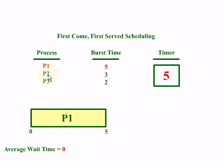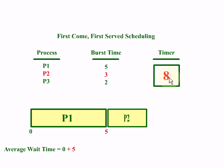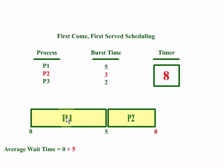Now next will be P2. Our P2 will start after 5 milliseconds — 6, 7, 8. Once P2 stops executing, you can see the waiting time of P2 was 5 seconds. Now we are done with P1 and P2.